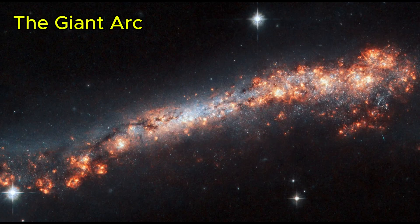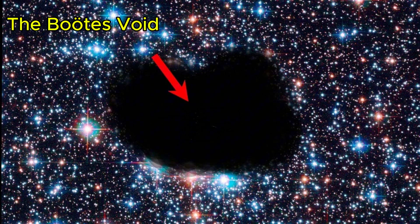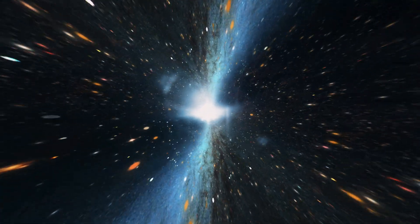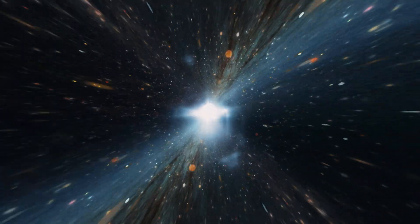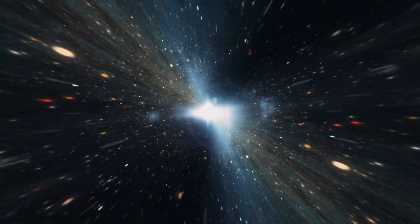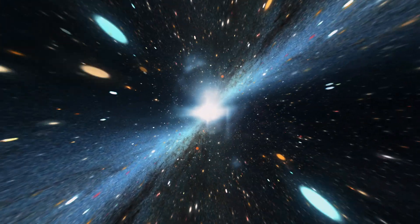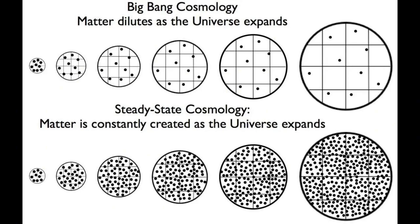And the Great Wall isn't alone. Similar formations like the Sloan Great Wall, the Giant Arc, and the Boötes Void are forcing astronomers to re-evaluate the cosmic map. To understand why structures like the Hercules-Corona Borealis Great Wall are so controversial, we need to talk about one of the most important and rarely questioned assumptions in all of cosmology: the cosmological principle.